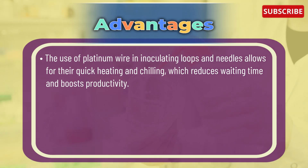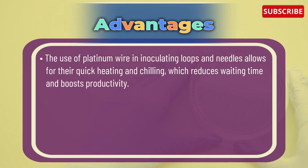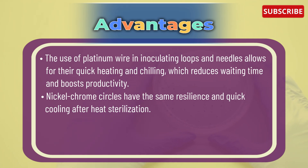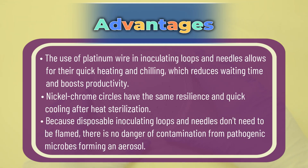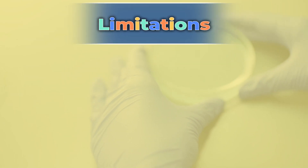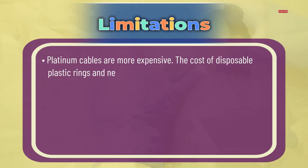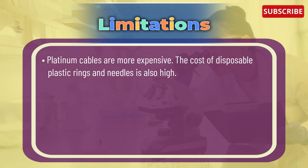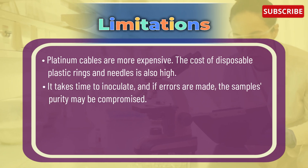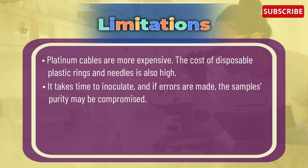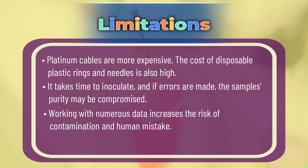Advantages of inoculating loops and needles: the use of platinum wire allows for quick heating and chilling, which reduces waiting time and boosts productivity. Nickel-chrome loops have the same resilience and quick cooling after heat sterilization. Because disposable inoculating loops and needles don't need to be flamed, there is no danger of contamination from pathogenic microbes forming an aerosol. Limitations: platinum cables are more expensive; the cost of disposable plastic rings and needles is also high. It takes time to inoculate, and if errors are made, the sample's purity may be compromised. Working with numerous samples increases the risk of contamination and human error.